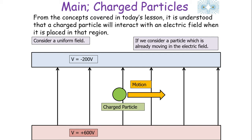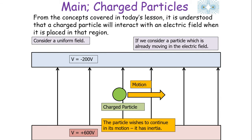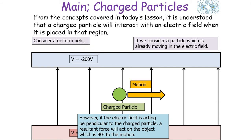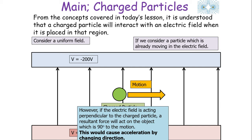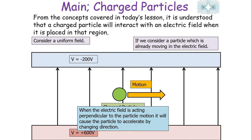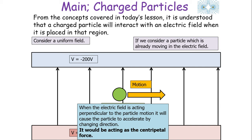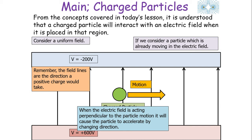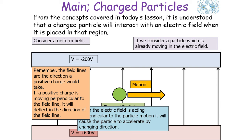Now consider a charged particle already in motion in a uniform field where the electrical field is acting perpendicular to the particle. The particle wishes to continue in its plane of motion due to inertia; however, a resultant electrostatic force acts at 90 degrees to that motion. This will not affect speed in that plane, but causes acceleration by changing the direction of motion — acting as a centripetal force. A positive charge moving perpendicular to a field line deflects in the direction of the field line, while a negatively charged particle deflects in the opposite direction.